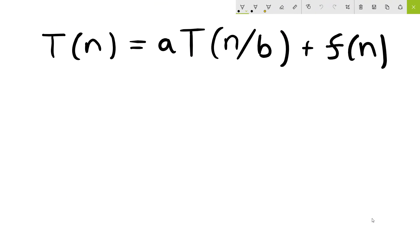The master method provides a very simple way to solve recurrences that take the following form. T of n equals some constant a times T of n over b, which is another constant, plus some positive function f(n).